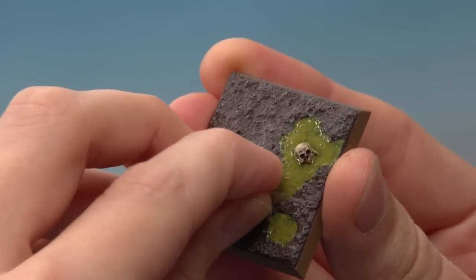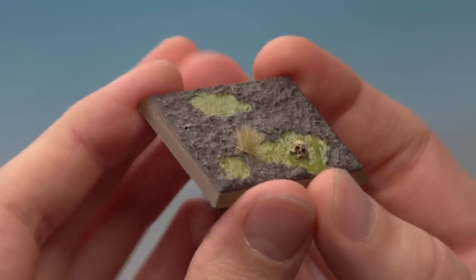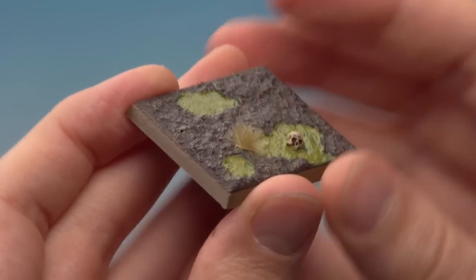Then grab hold of your base and just find a spot on it you want to place it down, and just press it down onto the texture just like that. You can add as many of these as you like, but I recommend that you don't go crazy. Once you've done this though, your base is complete.